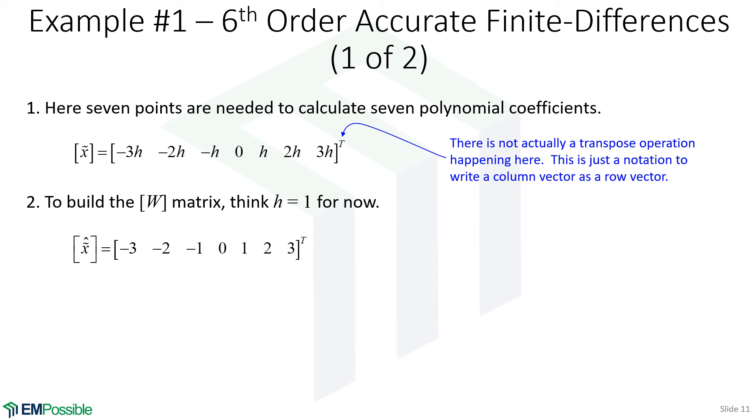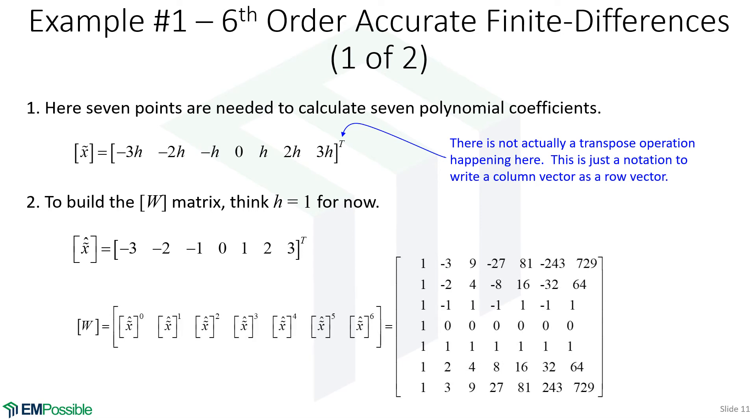From there, we build our W matrix, which is like building the X matrix from the previous lecture with H set to 1. This becomes our X column vector. Again, I'm using this notation so I can write it as a row vector and not take up precious vertical space. It's not actually a transpose operation. We build the W matrix with our X column vector to the 0 power, which we know we don't actually do—we insert all 1s. Then the next column is this X column vector, then the X column vector squared and cubed, to the 4th, 5th, and 6th finally.